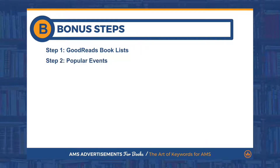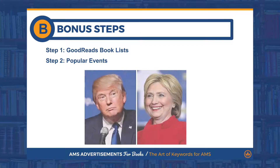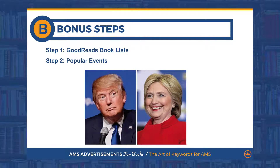Bonus step number two: look for popular events to piggyback off of. An example would be during elections — self-published authors had a lot of new areas in which to promote their books because of current political events and rhetoric, as well as a new slew of keywords to target due to the trendiness of the topic at the time.